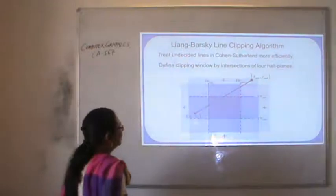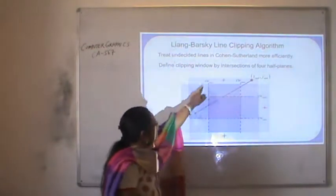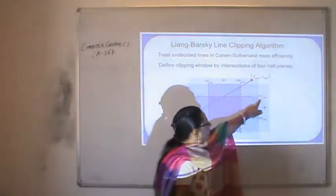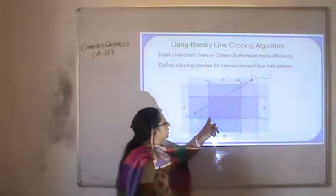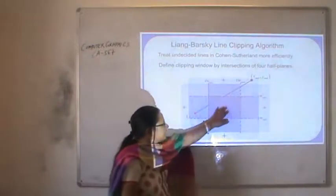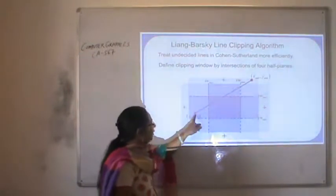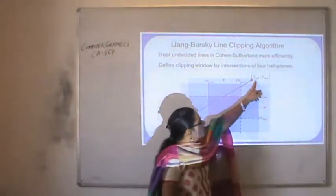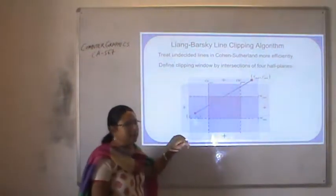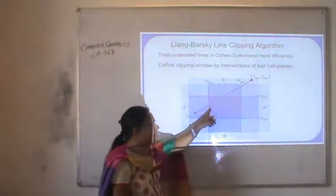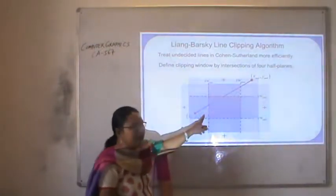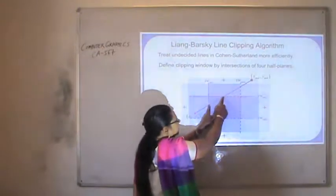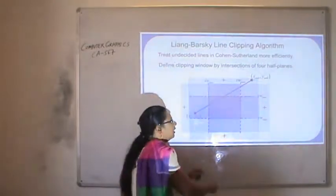As already discussed, this is the clipping window and it has the coordinates: x-min, x-max, y-min and y-max. Anything that lies inside this clipping window will be visible. For example, in this diagram there is a line crossing the clipping window with initial point x0, y0 and second point x, y0. The objective of line clipping is that the part lying on the clipping window will be visible and the rest will be invisible. We have to find out these two intersection points, because the line between them will be visible.